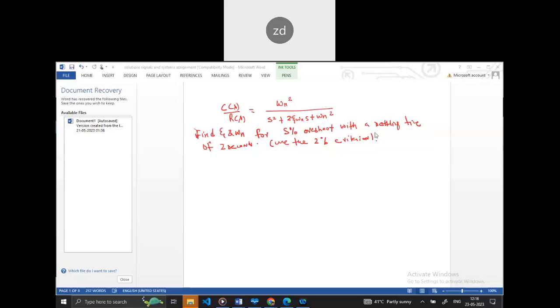So we have a question here. The question states that we have a transfer function. You can see the transfer function where C(s)/R(s) is equal to ωn² over s² plus 2ζωn·s plus ωn², where the zeta value and omega n value need to be found.